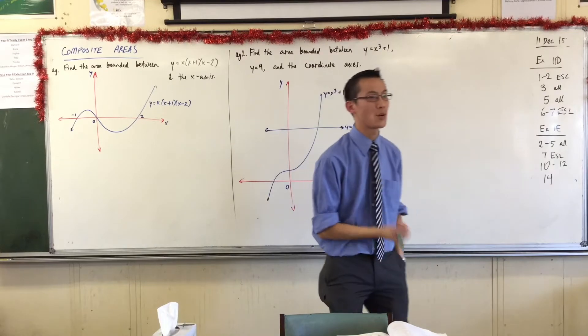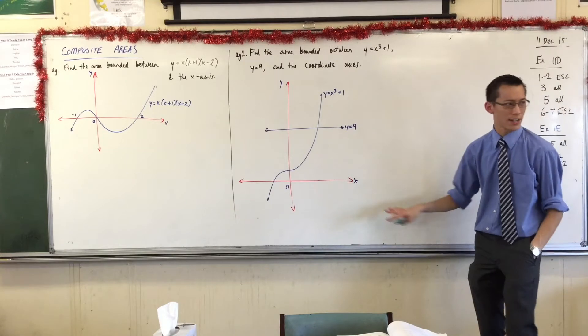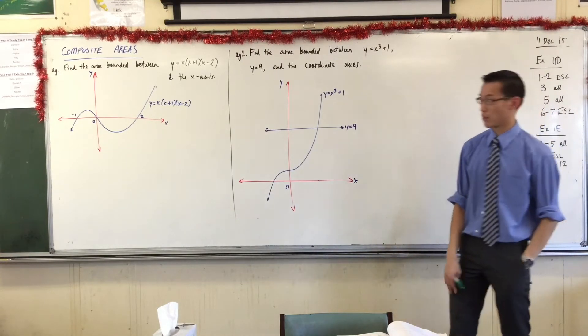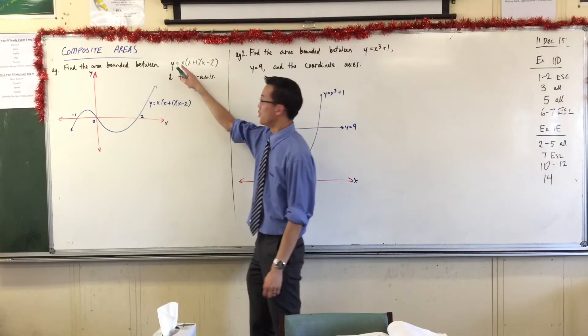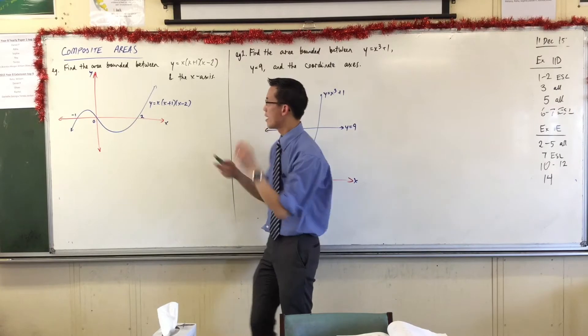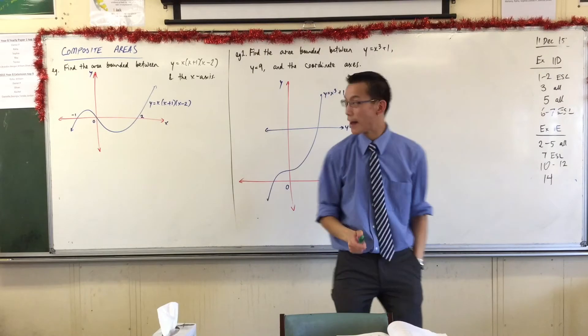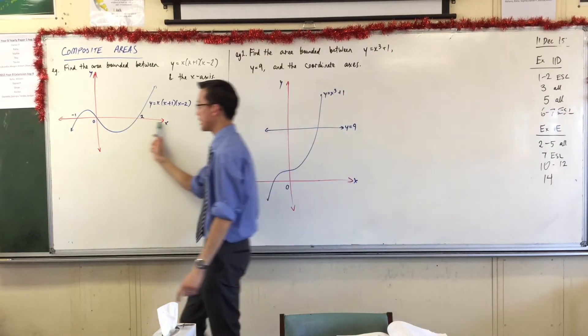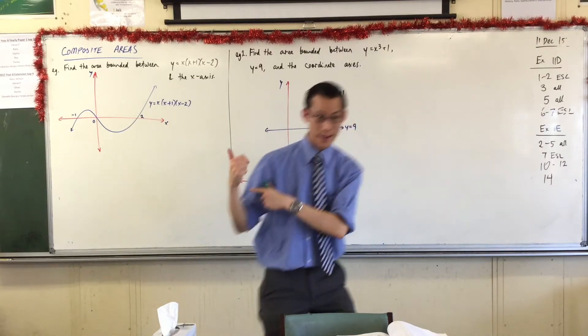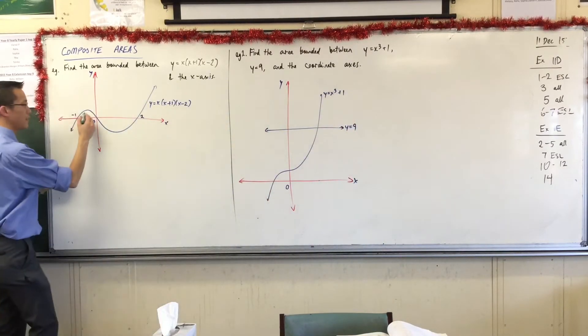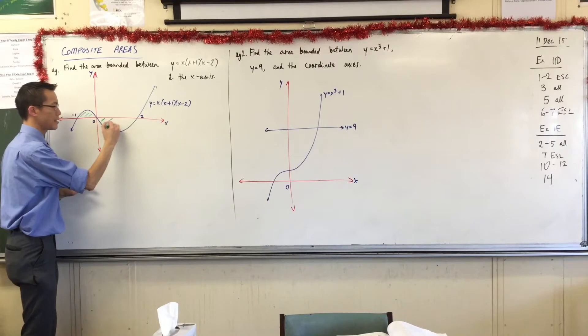The first step is always to get a picture. I'm giving you a bit of a nudge and showing you this is what these things look like. You've got a cubic here, you know where the roots are, so I put them on there. What's missing from this diagram is the area in question. It says the area bounded by the curve and the x-axis. So you can see there are two little chunks that fit those criteria. Here's one of the areas that's bounded by the curve and the axis, and here's the other one.